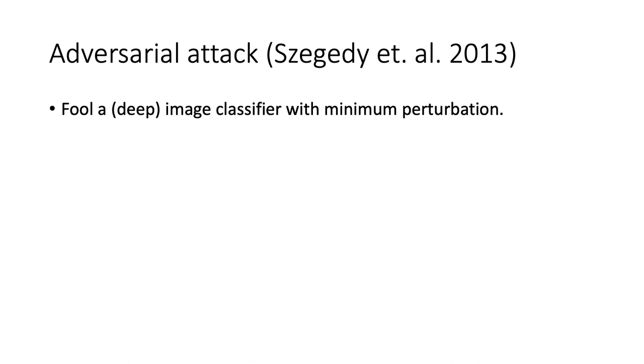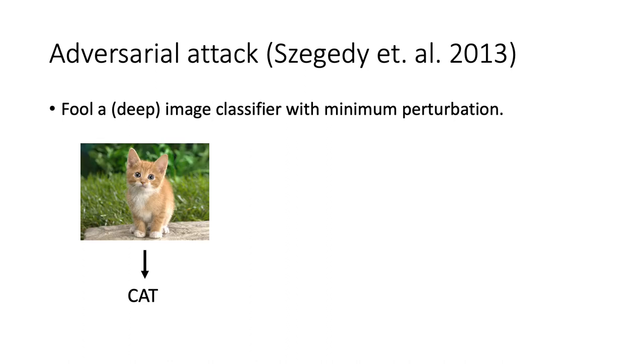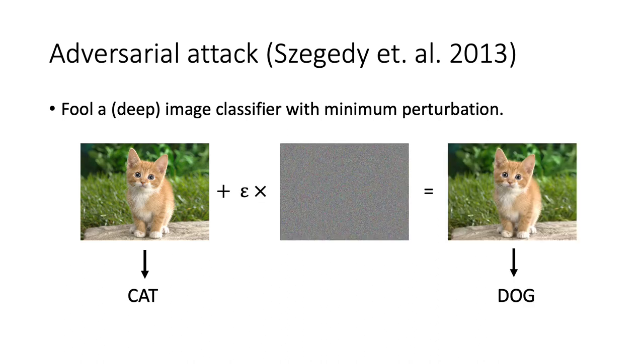The existence of adversarial examples is a phenomenon first observed by Szegedy in 2013. After one adds a small perturbation on a correctly classified image like this cat, a state-of-the-art neural network would misclassify the perturbed image as a dog. The perturbation is often visually imperceptible. There are many motivations why this phenomenon attracts so much attention.